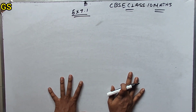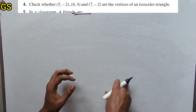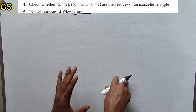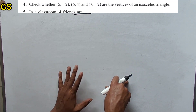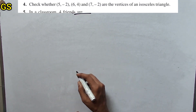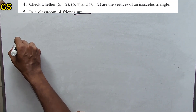Hi friends, welcome to CBSE Class 10 Math, Exercise 7.1, question 4. Check whether the points (5, -2), (6, 4), and (7, -2) are vertices of an isosceles triangle.